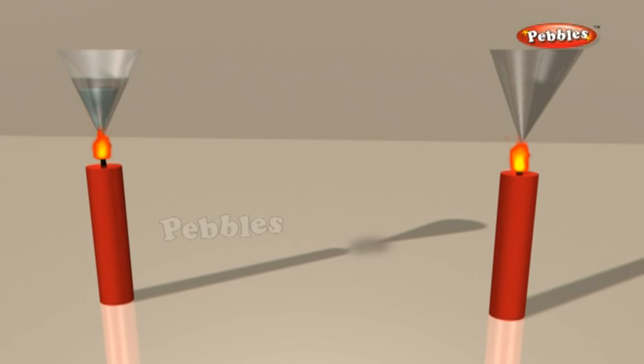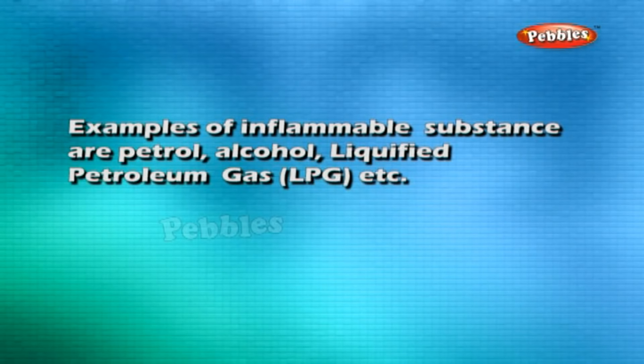The substances which have very low ignition temperature and can easily catch fire with a flame are called inflammable substances. Examples of inflammable substances are petrol, alcohol, and liquefied petroleum gas (LPG).